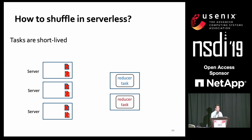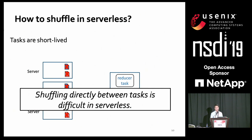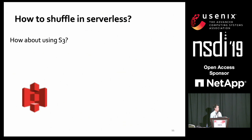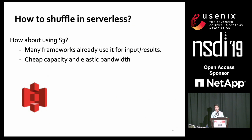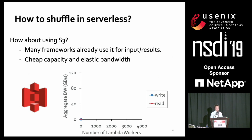A natural solution is to use a cloud storage system such as S3. Many frameworks already use S3 to store input/output results, and S3 has very cheap capacity. Storing 100 terabytes on S3 for a few hours costs only a few dollars. S3 also has very elastic bandwidth — when we launched different numbers of Lambda workers, the total aggregate bandwidth we can get from S3 scales almost linearly.